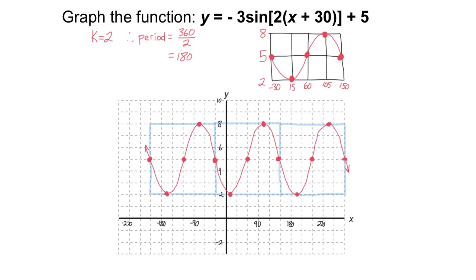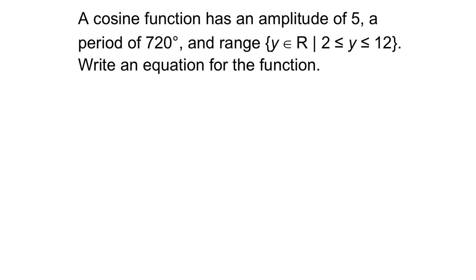We've looked at making a graph into an equation, and now making an equation into a graph. These are two fundamental skills in this unit. Next, making an equation of a function based on a description. So here's an example. A cosine function has an amplitude of 5, a period of 720 degrees, and a range of y is an element of the real numbers, but y must be between 2 and 12. Write an equation for the function. You have enough information here to figure out what the equation is. So why don't you pause the video and see if you can come up with this on your own.